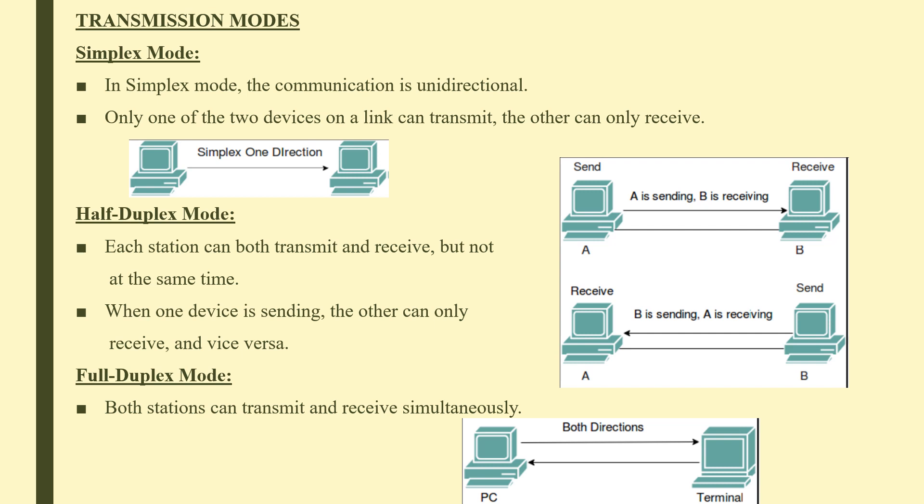Transmission mode refers to the transfer of data between two devices, also known as communication mode. There are three types: simplex mode, where communication is unidirectional and only one device can transmit while the other only receives; half duplex mode, where each station can both transmit and receive but not at the same time — the entire channel capacity is used for each direction.